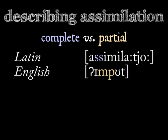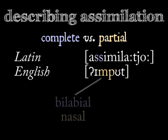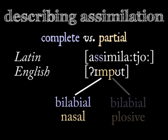But when I pronounce N as M before P in 'input,' that's a partial assimilation. The two sounds are both bilabial, but one's a nasal and the other's a plosive.